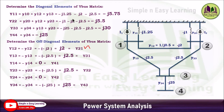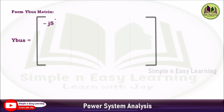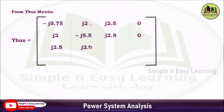So all 16 parameters are now determined. We can now form the complete Y-bus matrix with elements Y11 through Y44 arranged in the 4×4 format: Y11, Y12, Y13, Y14 in the first row, Y21, Y22, Y23, Y24 in the second, Y31, Y32, Y33, Y34 in the third, and Y41, Y42, Y43, Y44 in the fourth. This is how you form the Y-bus matrix for the given impedance diagram.